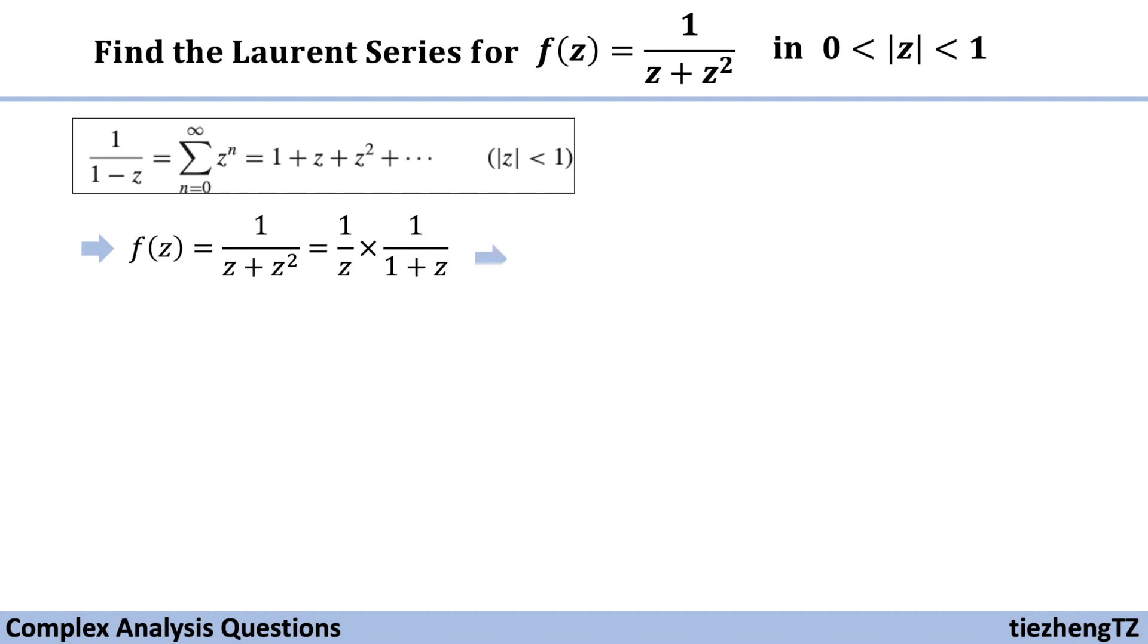Let's change this f(z) form into 1 over z times 1 over 1 minus negative z. Now we have this 1 minus part in the denominator. Next we just substitute negative z into that sum format, which is 1 over z times the sum from n equals 0 to infinity of negative z to the power of n.